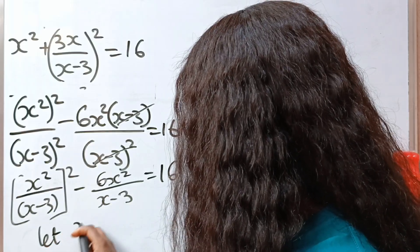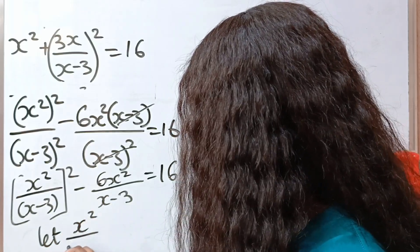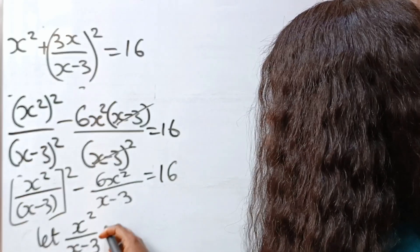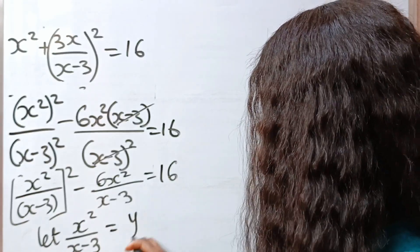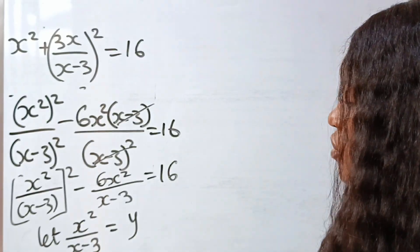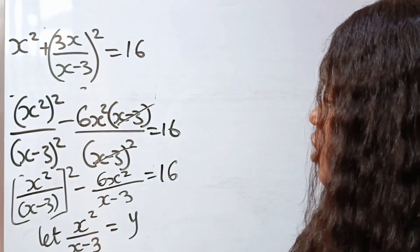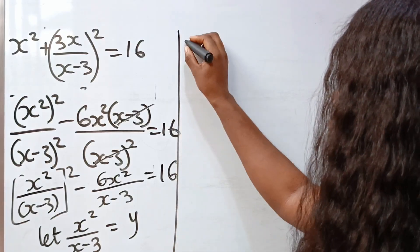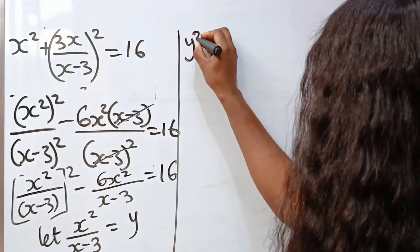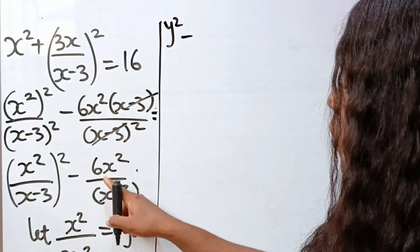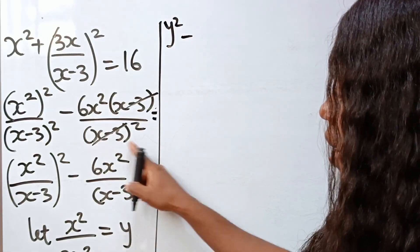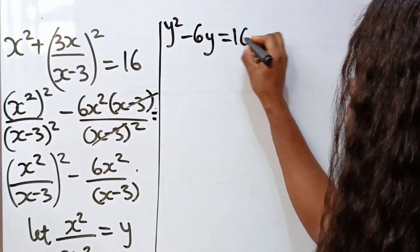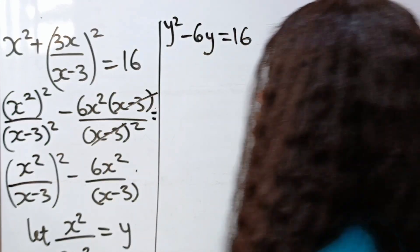Let x squared divided by x minus 3 be equal to y. So if we say this is equal to y, that means this is y squared. Now we have y squared minus 6y is equal to 16.